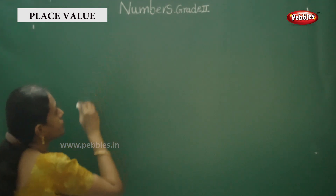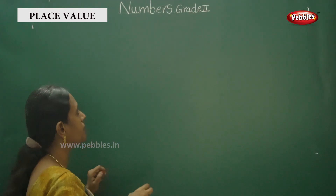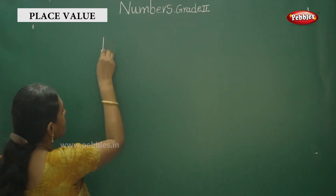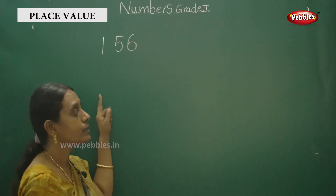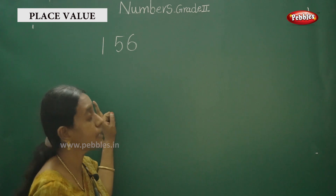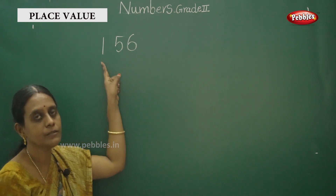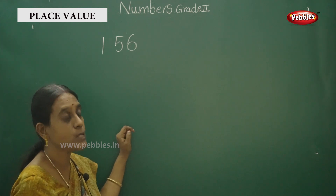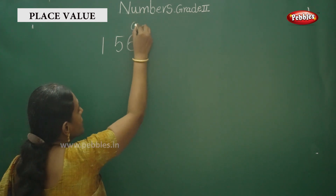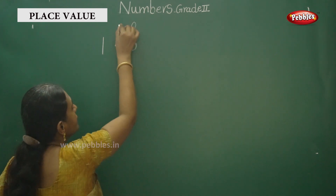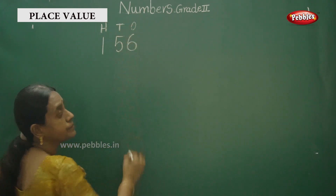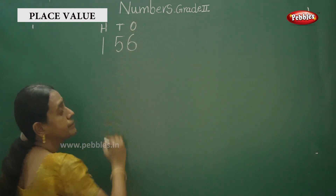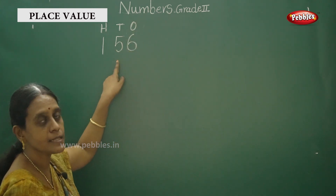Now we are going to write. I have to write first one number — one three-digit number. Listen here, children. This is the three-digit number. Say the number: 156. First, you have to place: this one is ones, this one is tens, and this one is hundreds.